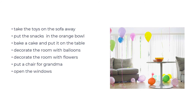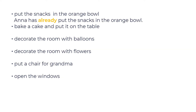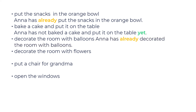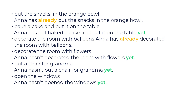Now let's do a fun exercise! There is a picture of a room on the screen and there is a list of activities that you need to do before the party begins. Think about how you can transform these activities into sentences with YET and ALREADY. For example: take the toys on the sofa away — Anna has already taken the toys on the sofa away. Now pause the video and do the other activities in the same way. Let's check! Anna has already put the snacks in the orange bowl. Anna has not baked a cake and put it on the table yet. Anna has already decorated the room with balloons. Anna hasn't decorated the room with flowers yet. Anna hasn't put a chair for grandma yet. Anna hasn't opened the windows yet.